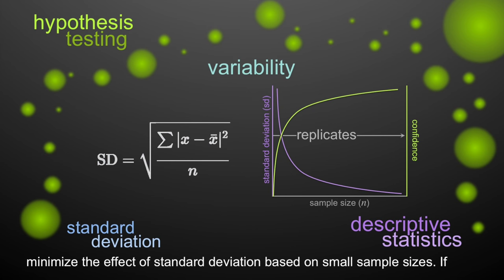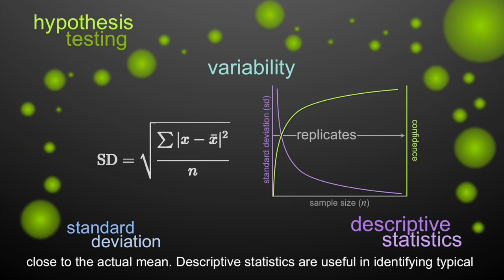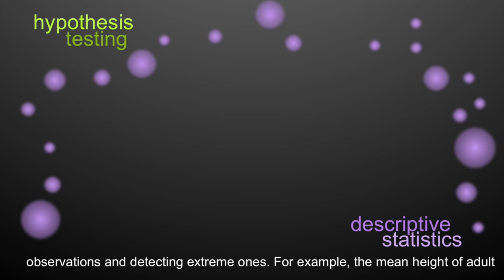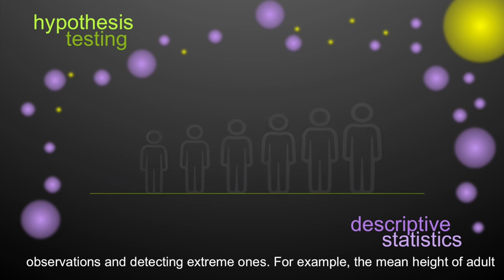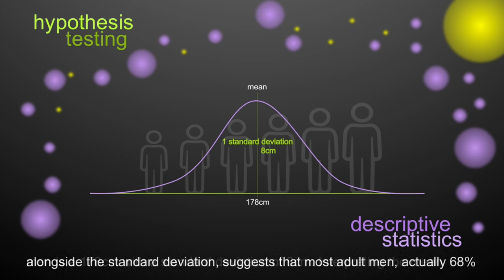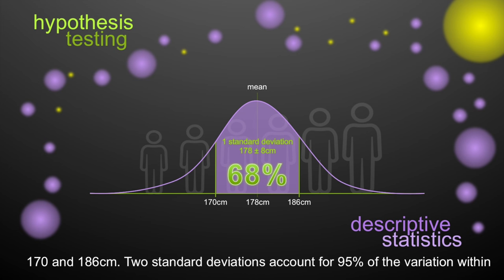Replicates serve to minimize the effect of standard deviation based on small sample sizes. If standard deviation is acceptably low, this tells us that the sample mean is very close to the actual mean. For example, the mean height of adult men is 178 cm with a standard deviation of 8 cm. This suggests that most adult men — 68% to be precise — will be 178 plus or minus 8 cm tall, meaning 68% of men will be between 170 and 186 cm.